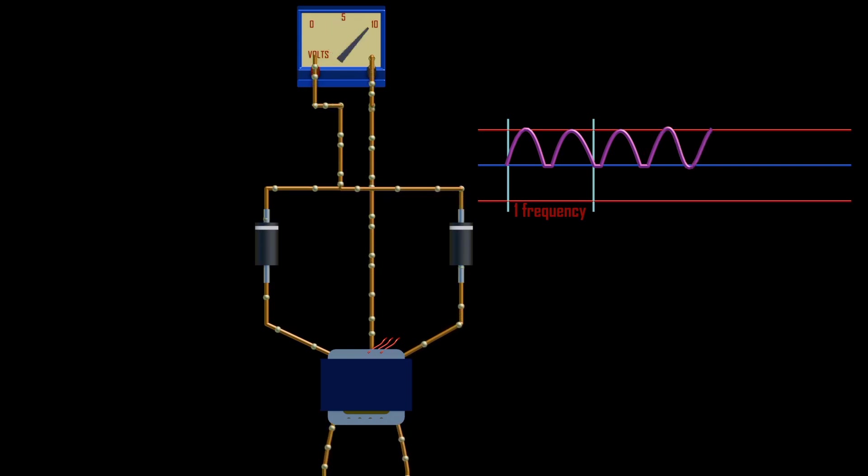We will receive pulsating DC with positive half cycles alone, such that the frequency of the output will be 120 Hz instead of 60 Hz and 100 Hz instead of 50 Hz.